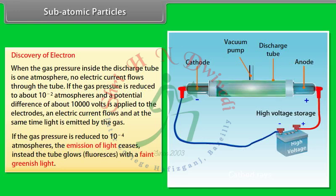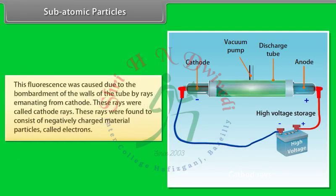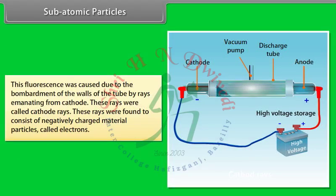Instead, the tube glows with fluorescence, a faint greenish light. This fluorescence was caused due to the bombardment of the walls of the tube by rays emanating from the cathode. These rays were called cathode rays. These rays were found to consist of negatively charged material particles called electrons.